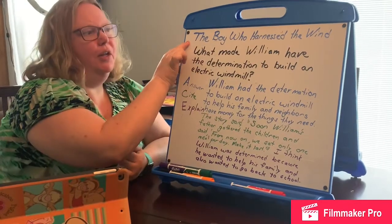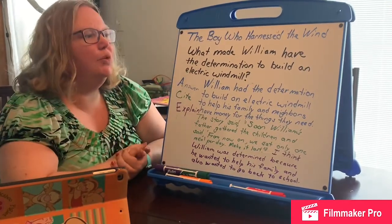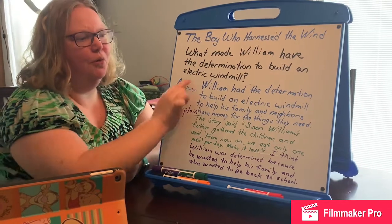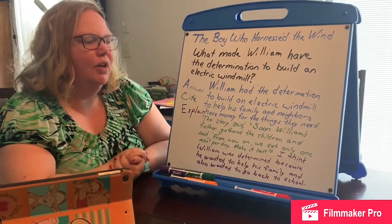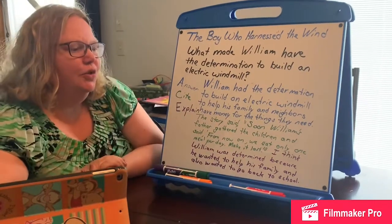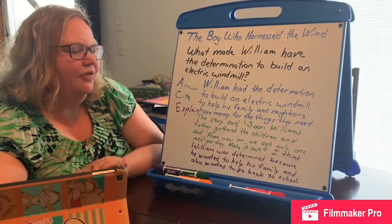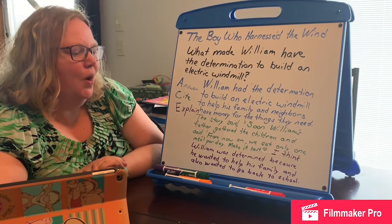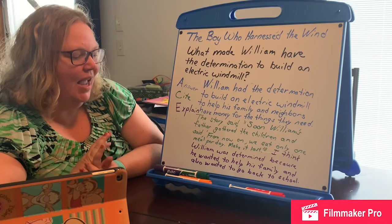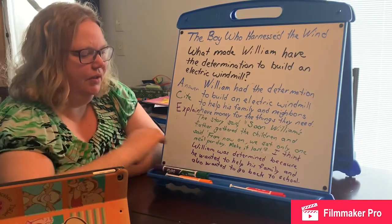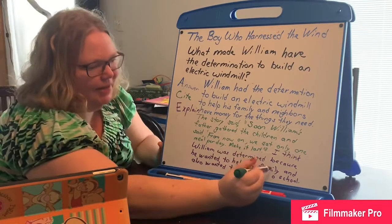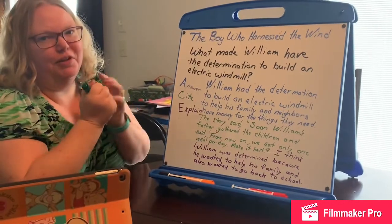So again, this is about the story The Boy Who Harnessed the Wind. The question was: what made William have the determination to build an electric windmill? We answered, we did a cite, and we explained. William had the determination to build an electric windmill to help his family and neighbors have money for the things they need. The story said, 'Soon William's father gathered the children and said, from now on we eat only one meal per day. Make it last.' I think William was determined because he wanted to help his family and also wanted to go back to school.